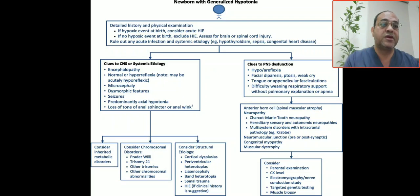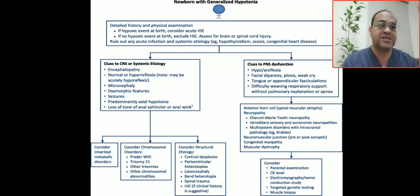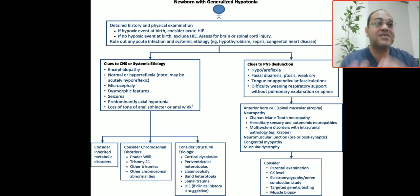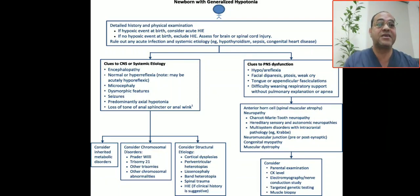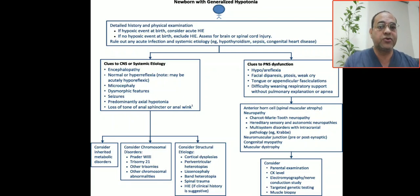Differentiate upper from lower motor neuron: hypotonia with weakness indicates lower motor neuron; hypotonia without weakness indicates upper motor neuron. In upper motor neuron lesions, the level of consciousness is affected — the baby is encephalopathic, dysmorphic, may have seizures, predominantly axial hypotonia, and loss of sphincter tone.